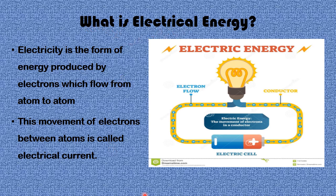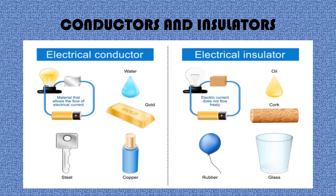Starting with the concept of electrical energy: electricity is the form of energy produced by electrons which flow from atom to atom. This movement of electrons between atoms is called electrical current. Electrical energy is the movement of electrons in a conductor — as you can see, you have wires, a bulb, a conductor which shields the wire, and an electric cell.